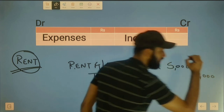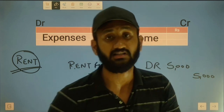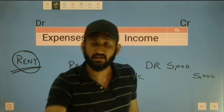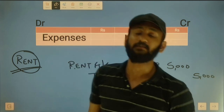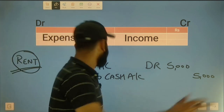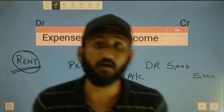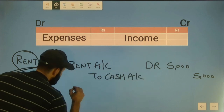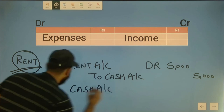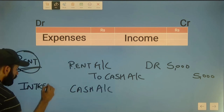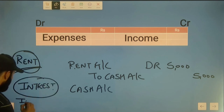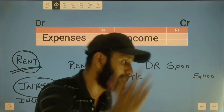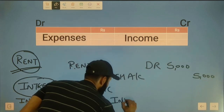These are the three rules - personal, real, nominal. Every transaction will affect two accounts. If one is debit, the other will be credit. If you pay rent, rent account is debit and cash account is credit. If you receive interest income, cash comes in so cash account is debited. Interest is income, so in the nominal account rule - debit all expenses and credit all incomes - interest account is credited. The entry is: cash account debit to interest account.